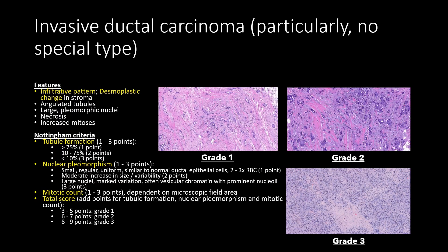Now we can speak about invasive ductal carcinoma — particularly invasive ductal carcinoma of no special type, which is important because there are several different subtypes. Broadly, we now have a lesion in which cells have invaded past the capsule and into the stroma, showing an infiltrative pattern with glands intermixed in the stroma, desmoplastic change surrounding them, more angulated tubules, large pleomorphic nuclei, and potentially necrosis and increased mitoses.